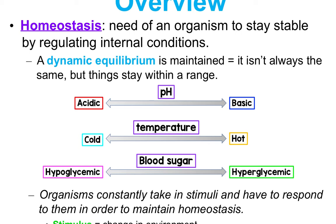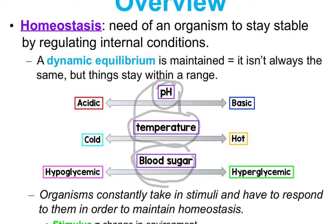Living systems have a range of tolerance — there's never really one specific value. Some are more tolerable than others. If we take a look at these three examples: pH, temperature, and blood sugar, there can be a range in the middle where an organism tolerates it. On one side their body can be too acidic, and on another side too basic, but falling within a tolerable range keeps any organism within a dynamic equilibrium.